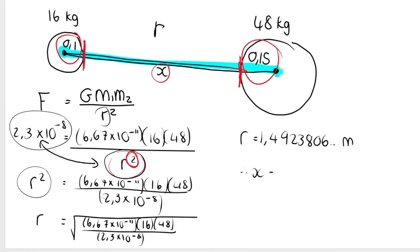So we're going to say therefore X is equal to 1.49 dot dot dot minus 0.1 minus 0.15. Remember not to round this off. So type the whole thing on your calculator, minus 0.1 minus 0.15.